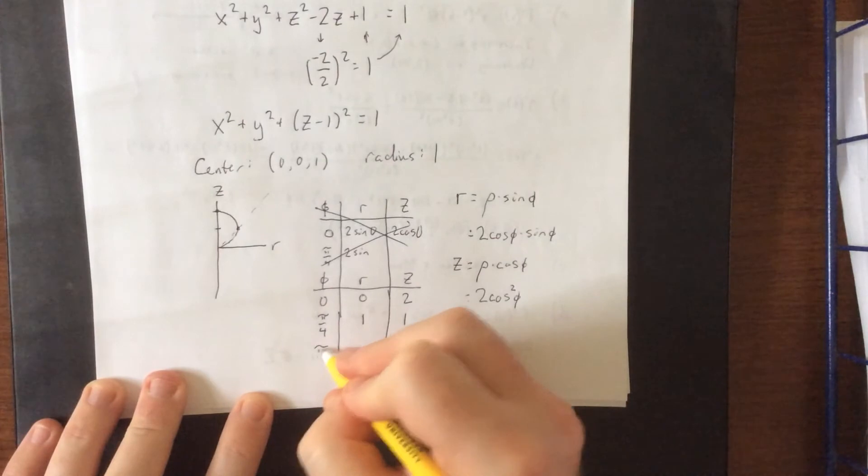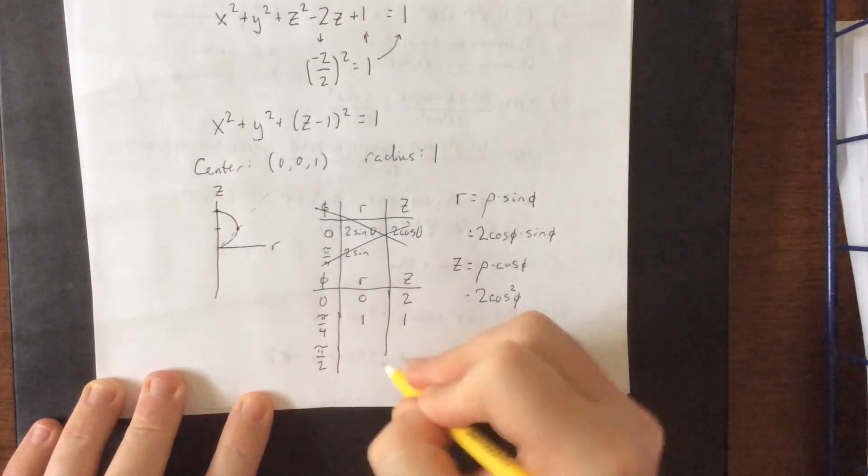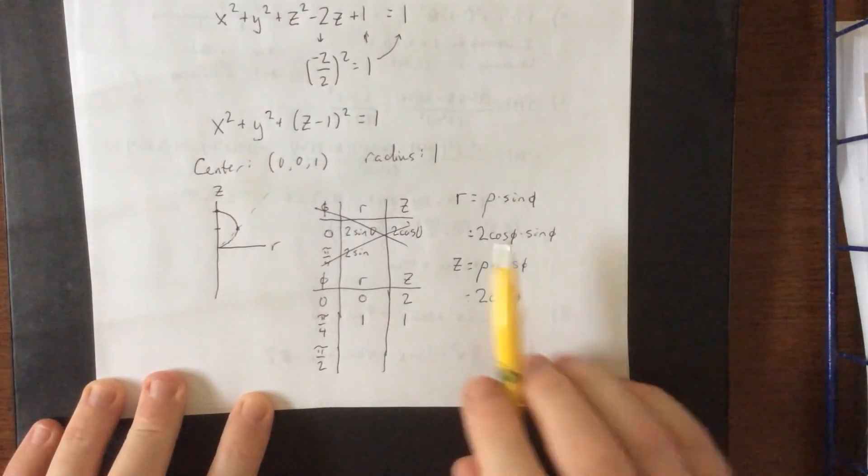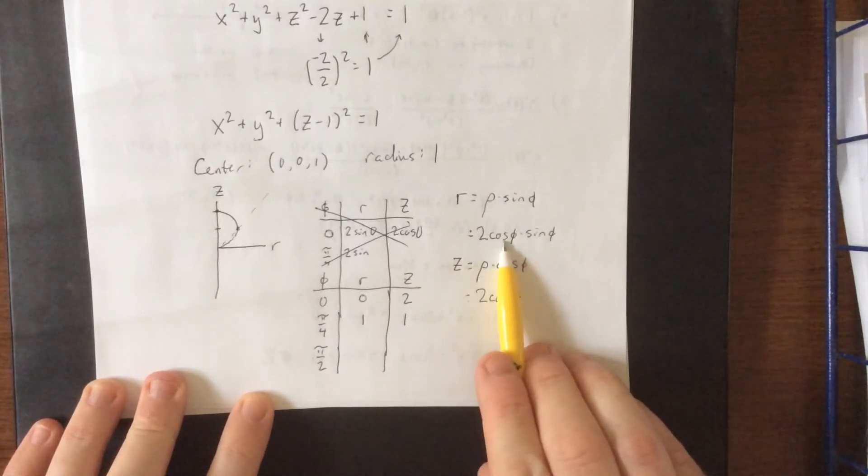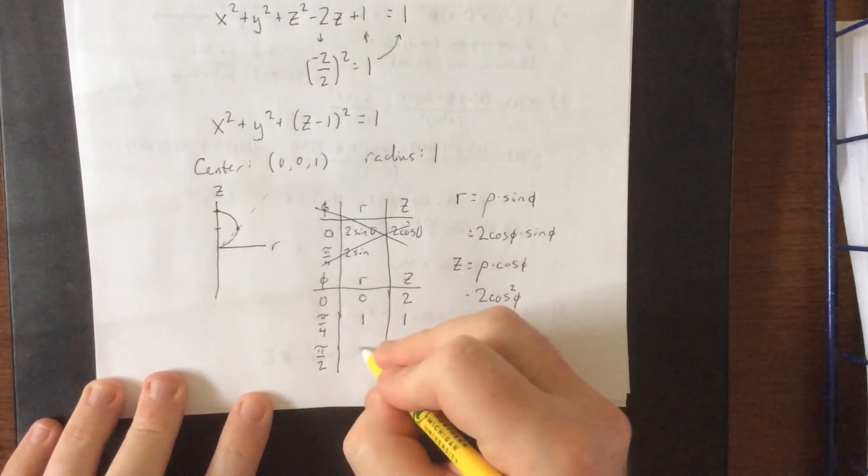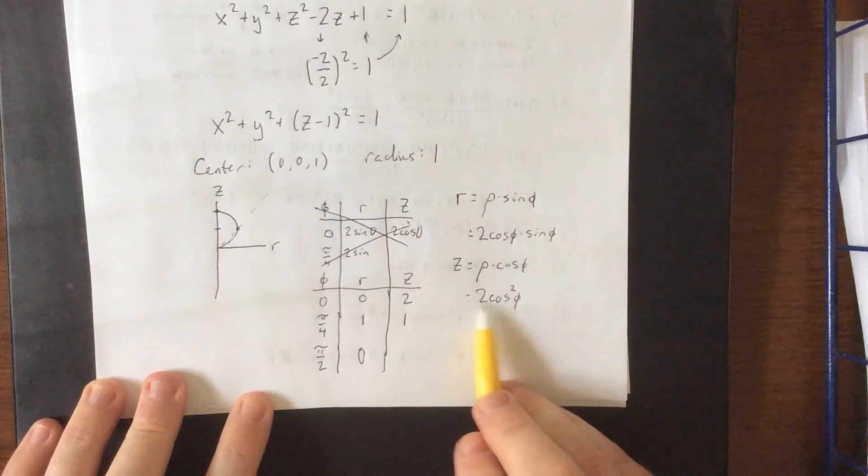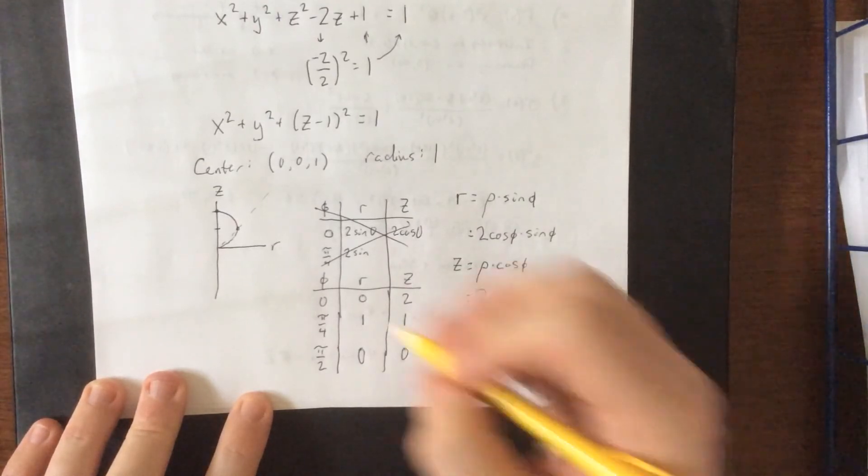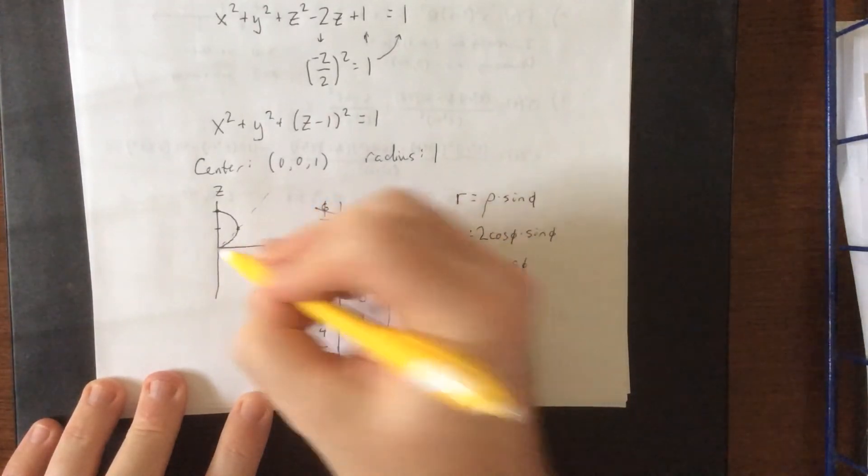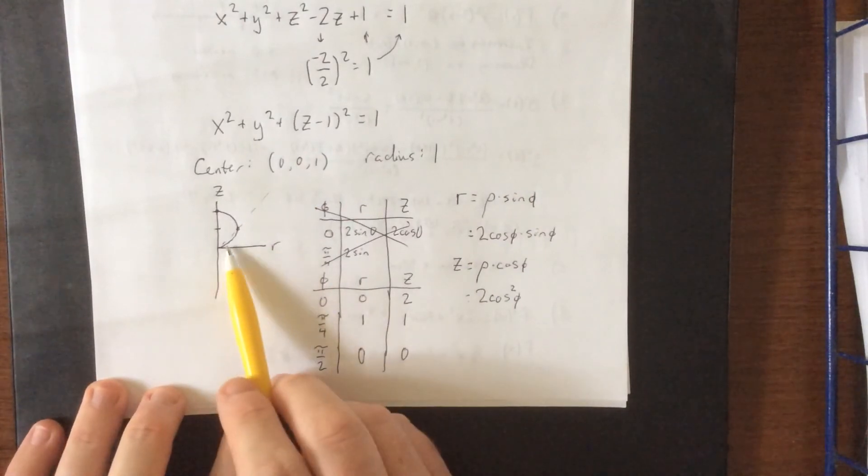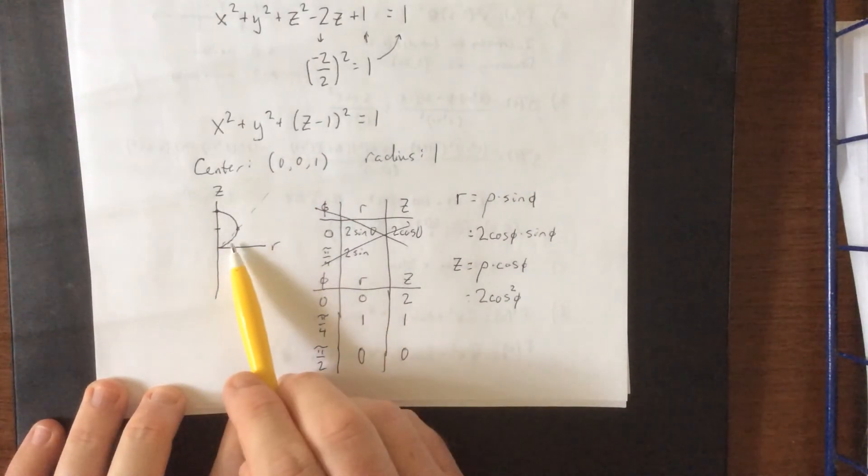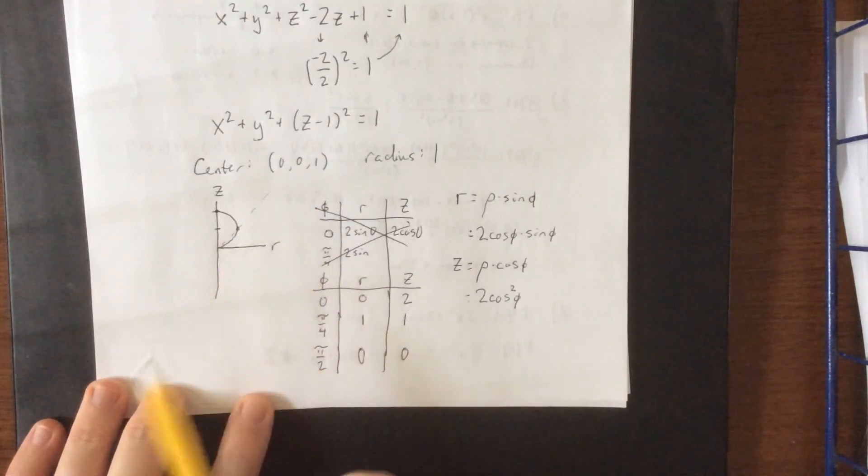And finally, if we go down to pi over 2, R would be 2 times 0 times 1, z would be 2 times 0 squared, at which point it comes back and hits the pole. And indeed, if we were to take this semicircular region and rotate it about the z-axis, that would give us what we're looking for.